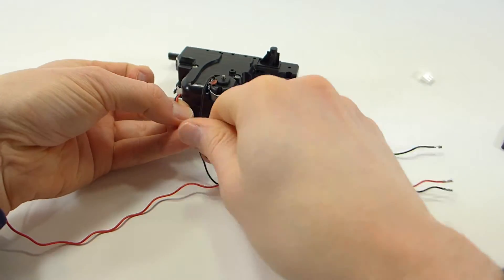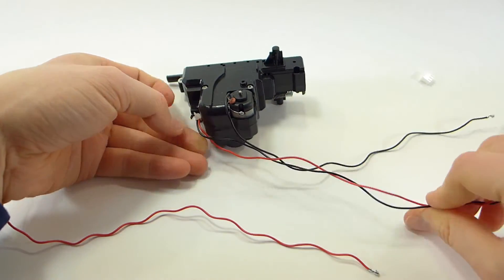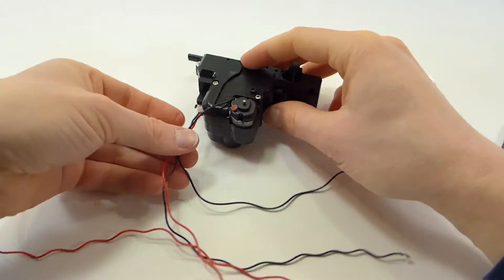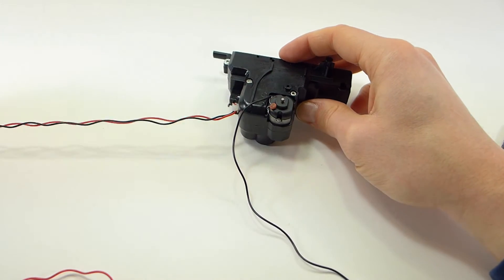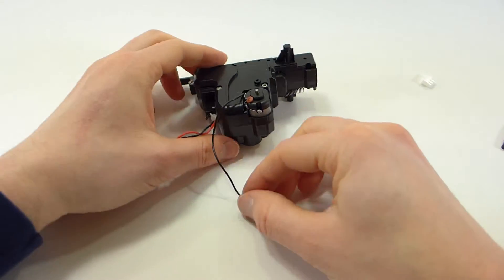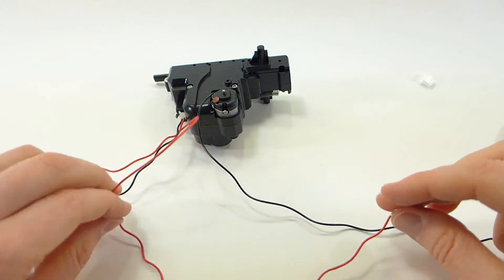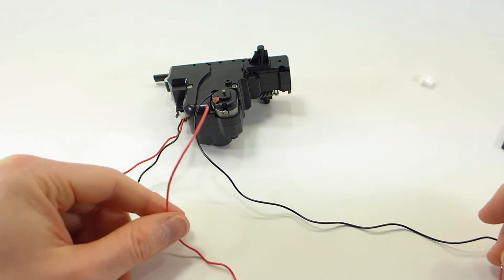Now I'm also going to untwist the two wires from the limit switch so we can deal with them individually. And this is what your unit should look like now. One wire connected to the motor negative, an extra red wire that's not attached to anything, and the two wires going to the limit switch.